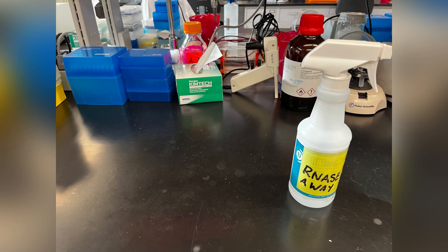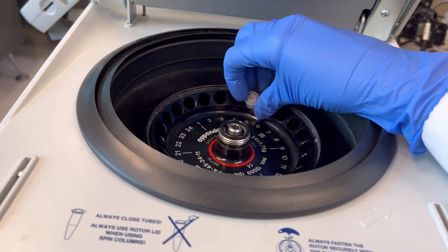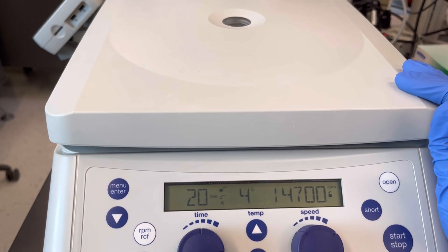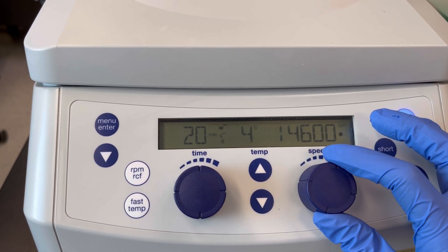Wipe down your bench before putting your tubes on it with RNase Away. Spin it down for 15 minutes at 14,000 rpm.